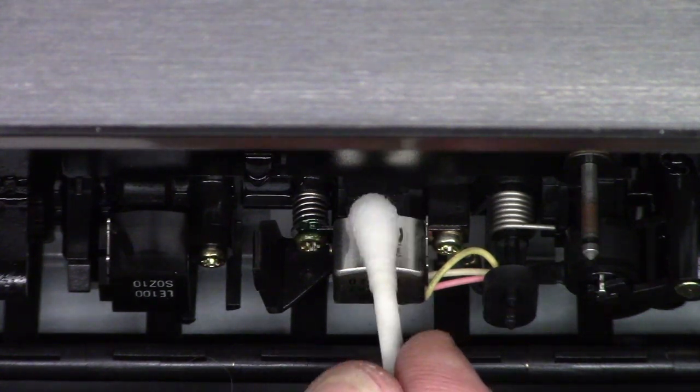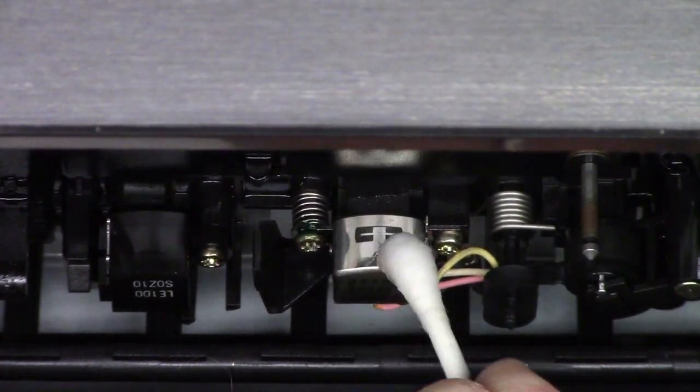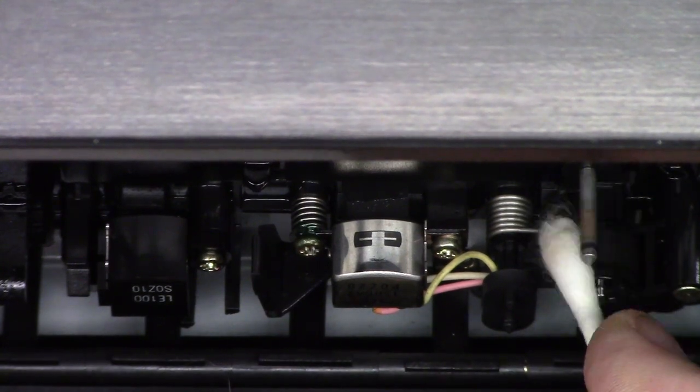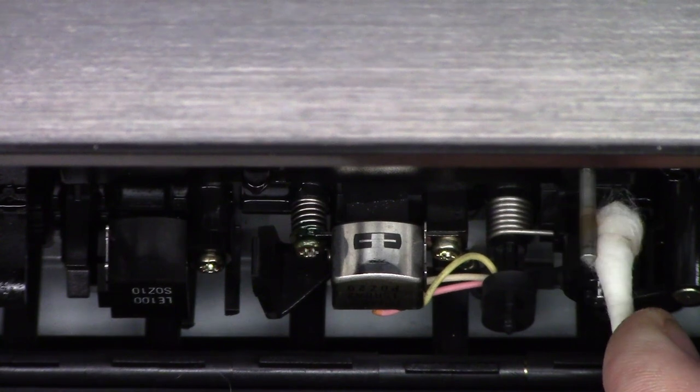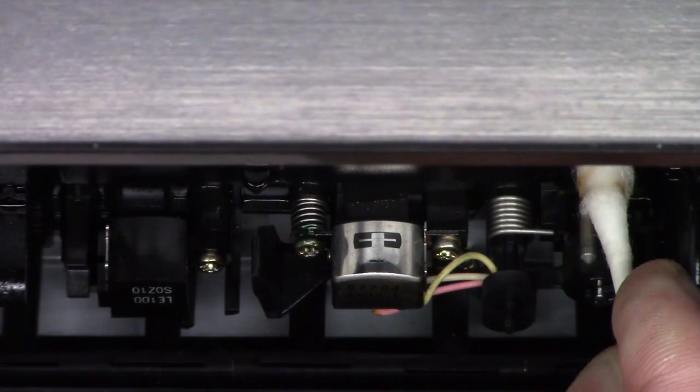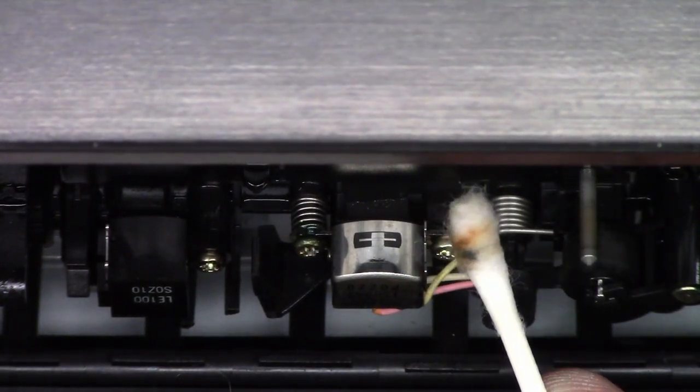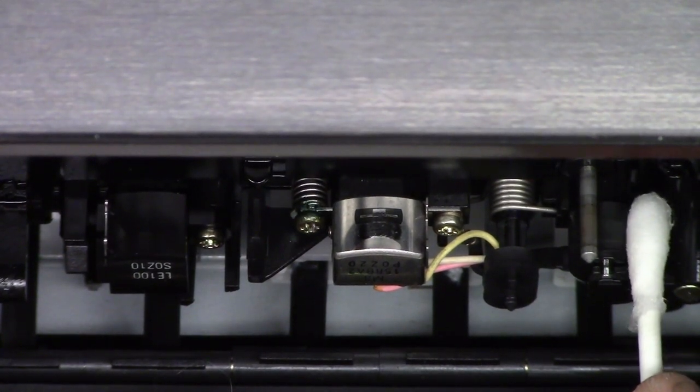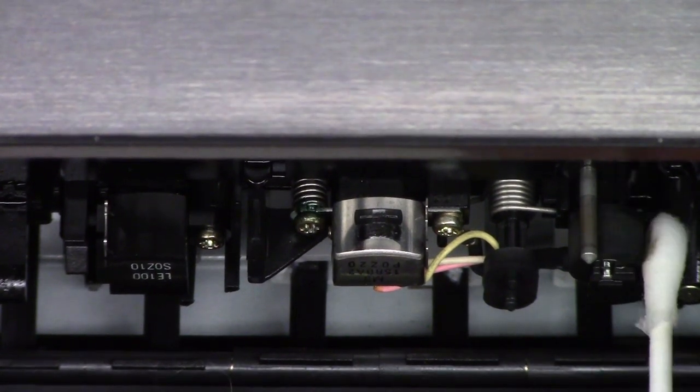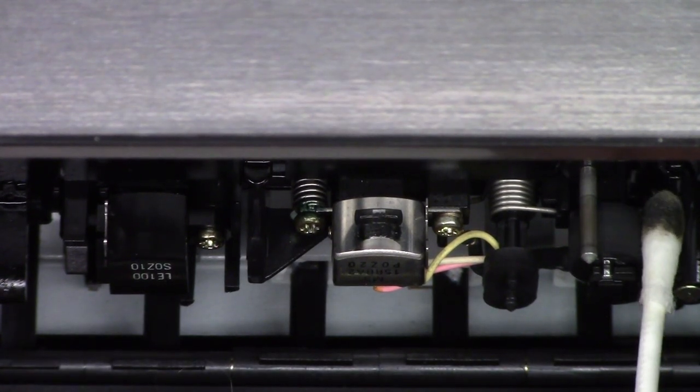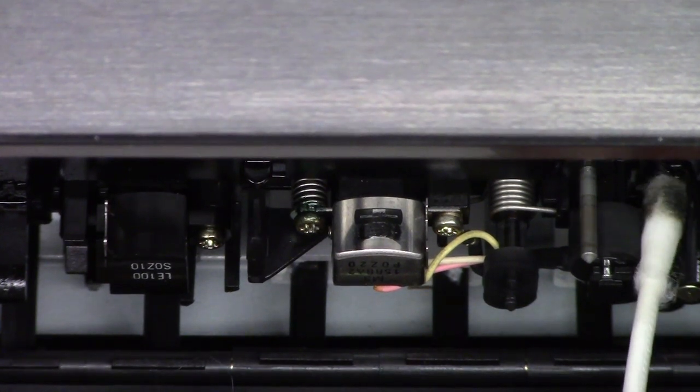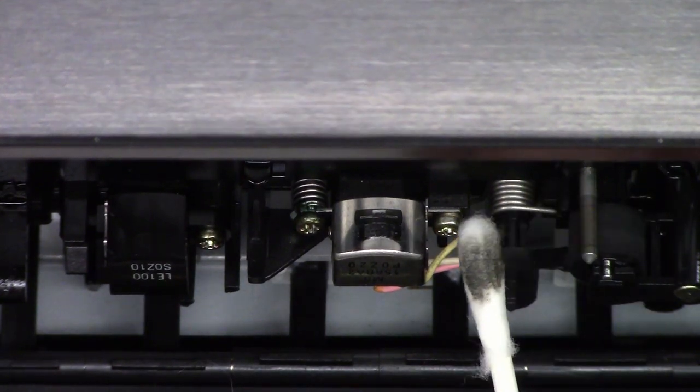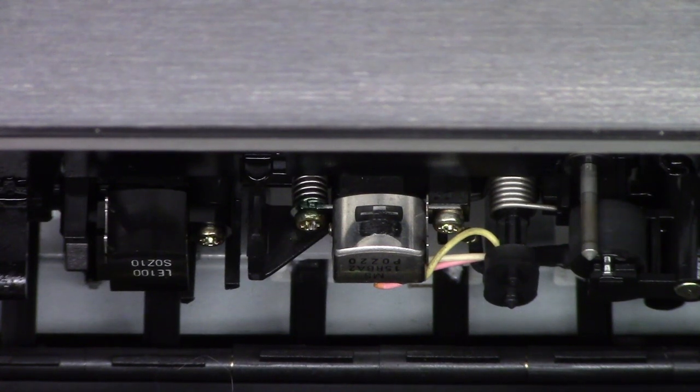We'll do the same thing to the other deck. We'll wipe off the head good. This is the dummy erase head because it does not record on this deck. Look at all that that came off. Now we'll clean the pinch roller. Look at all that. So we should be ready to go. Let's hook up some speakers and play a tape.